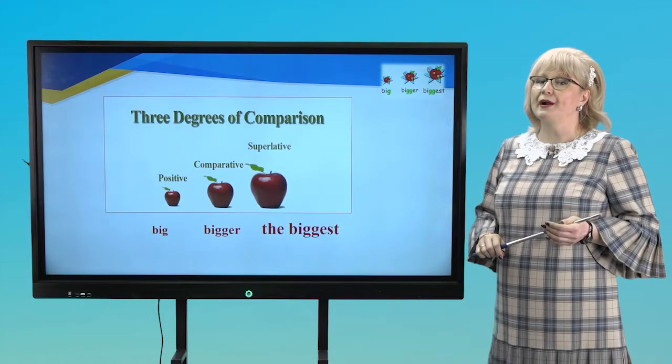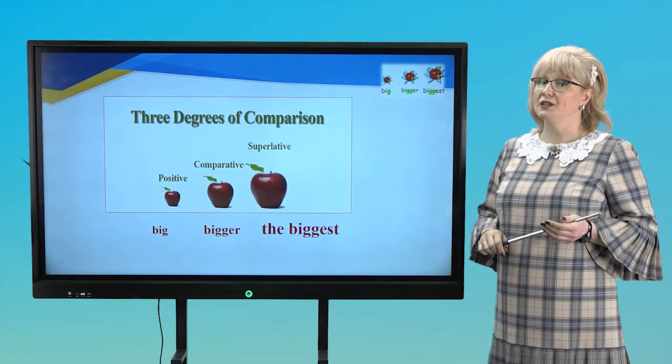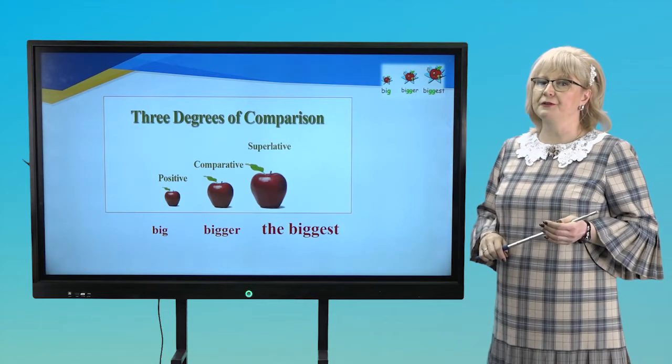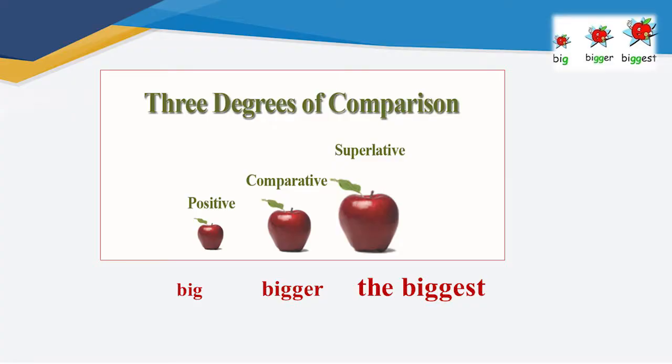There are three comparison degrees of adjectives. What are they? Positive, comparative, superlative. For example, big, bigger, the biggest.